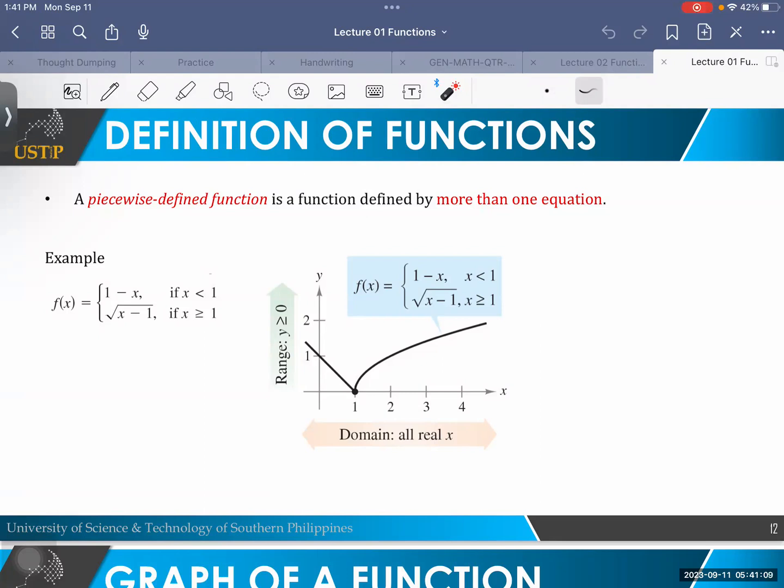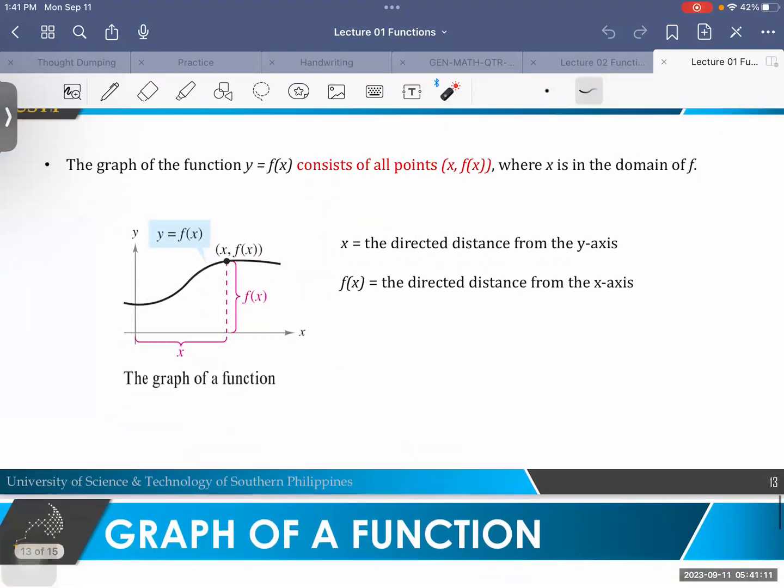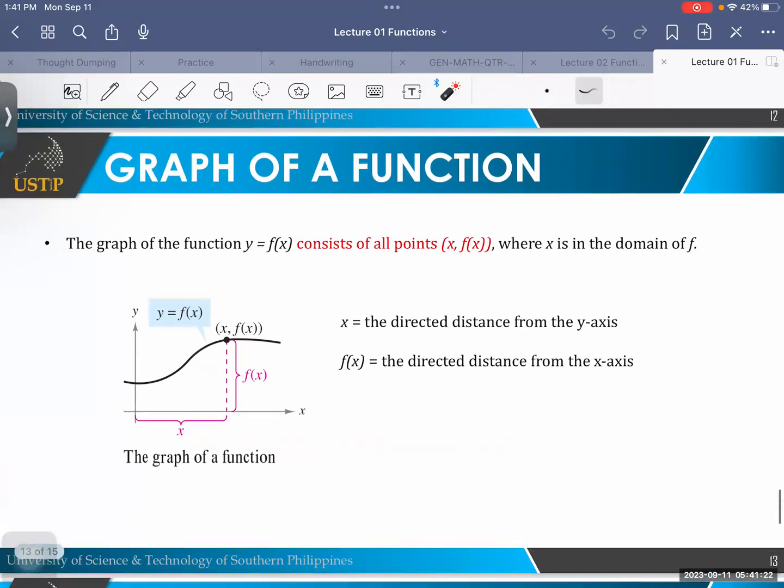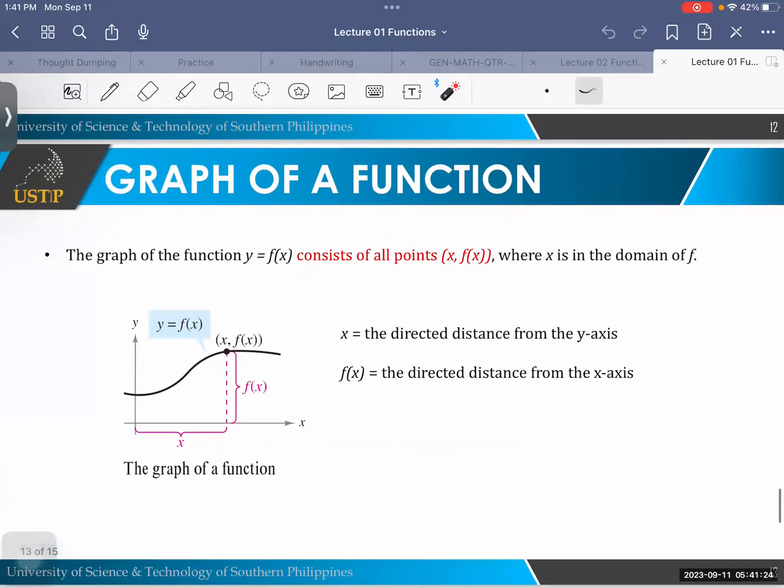So in finding the value of a function, class, basically you are just finding the ordered pair or point. You have the x coordinate, so you can plot that on the graph of the function. So you have x given, and then you find f of x. So you get x, f of x - that is the ordered pair.